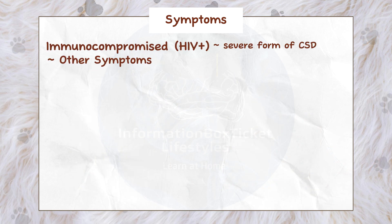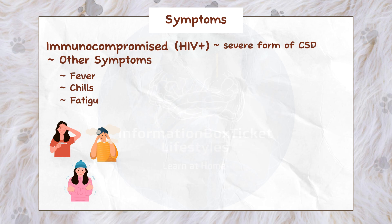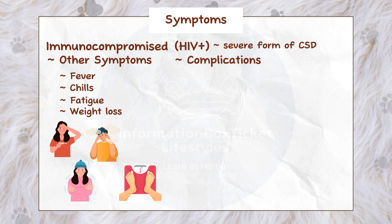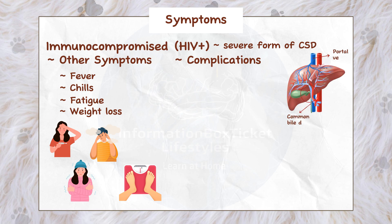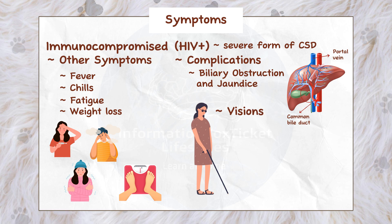Other signs of bacillary angiomatosis include fever, chills, fatigue, and weight loss. Bacillary angiomatosis can create complications when the lesions cause deformity or when the lymph nodes inside the body enlarge. For example, larger lymph nodes surrounding the portal vein might compress the common bile duct, resulting in biliary blockage and jaundice. Finally, if an angiomatosis nodule grows in one of the eyes, it may result in unilateral vision loss.